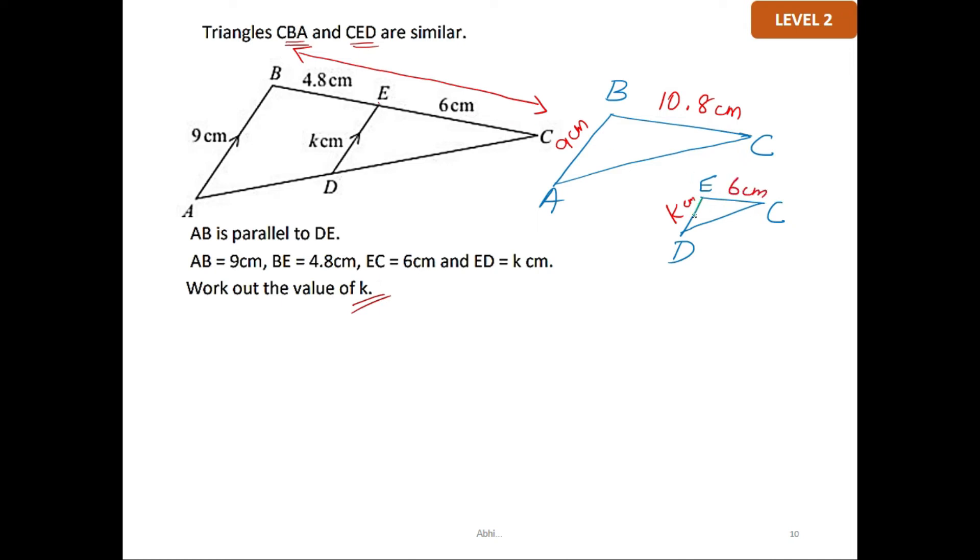Now taking the ratios, I have k cm which corresponds to the side AB which is 9. So I will start with them: k over 9 equals 6 over 10.8. To find k, you will cross multiply: 6 multiplied by 9 over 10.8. The value of k is equal to 5 cm.